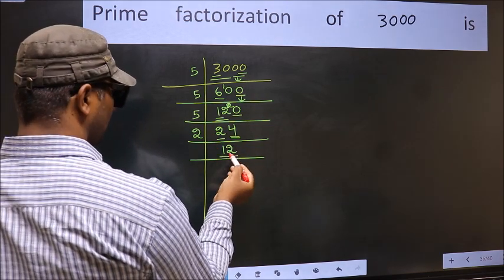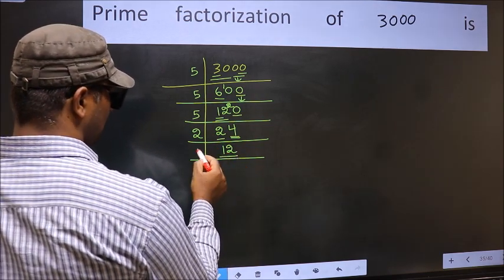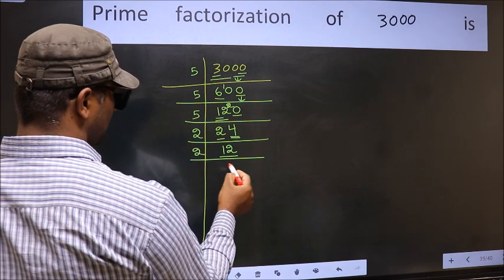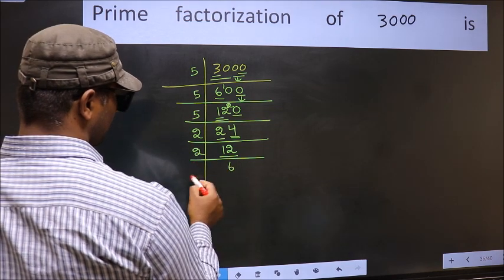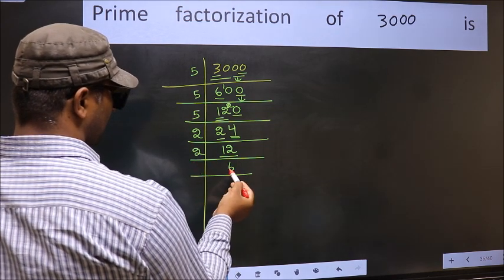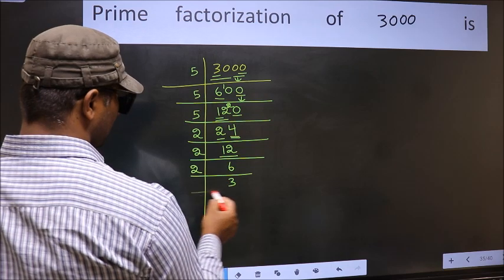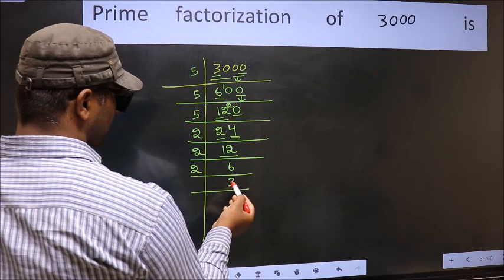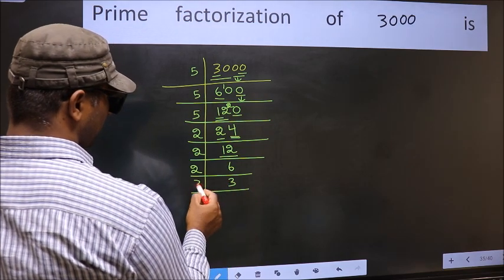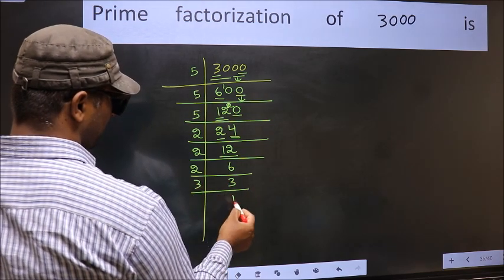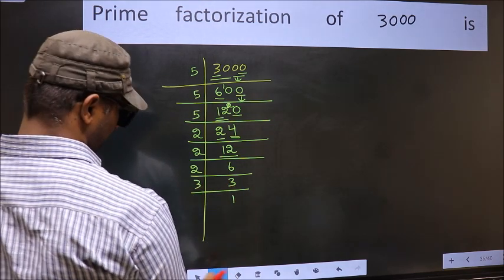Now here we have 12. 12 is 2, 6 is 12. Now we have 6. 6 is 2, 3 is 6. Now we have 3. 3 is a prime number, so 3, 1 is 3.